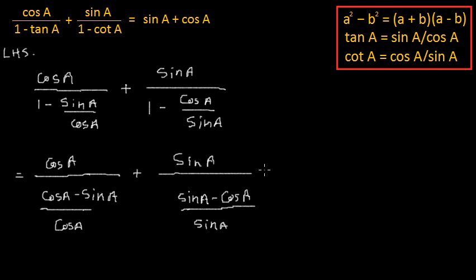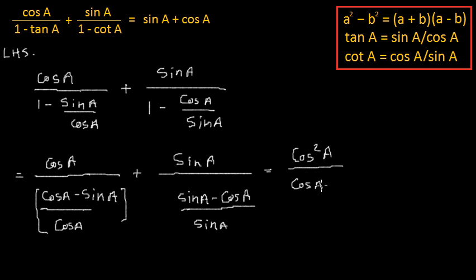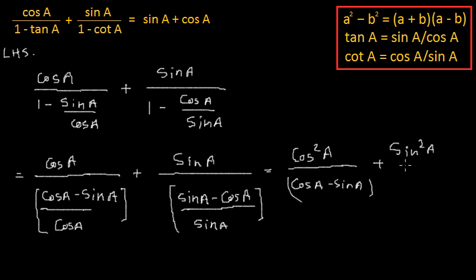This further can be written as cos squared A divided by cos A minus sin A, for the first term, and sin squared A divided by sin A minus cos A for the second term.